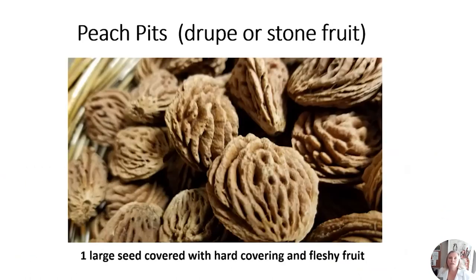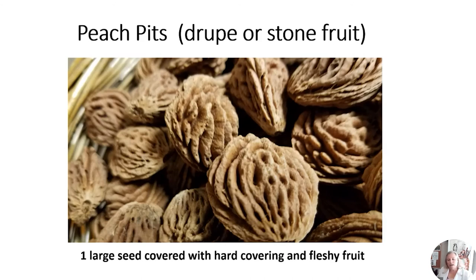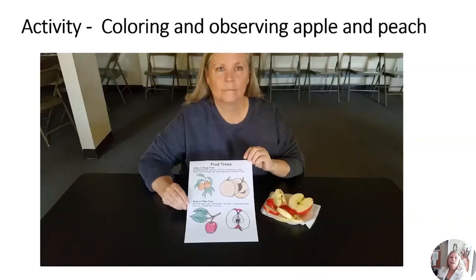Inside the peach is this peach pit — where the seed is. It's got this hard woody covering, and we call it a drupe or stone fruit. Inside that woody covering is just one seed with that hard covering and the fleshy fruit.